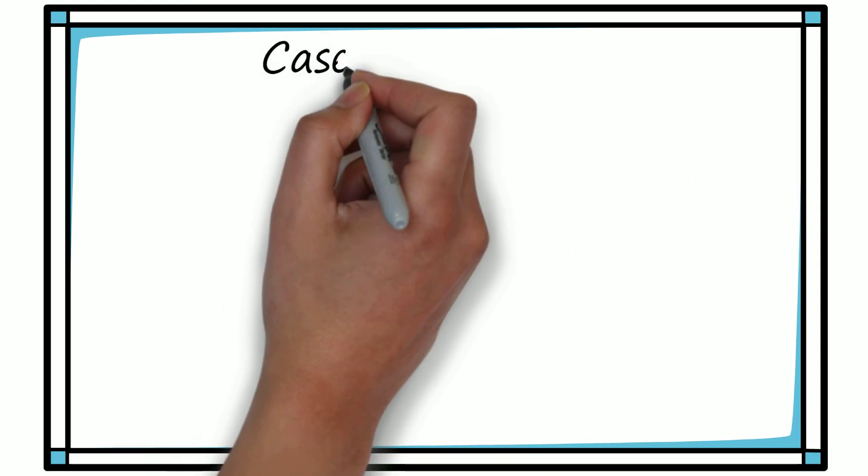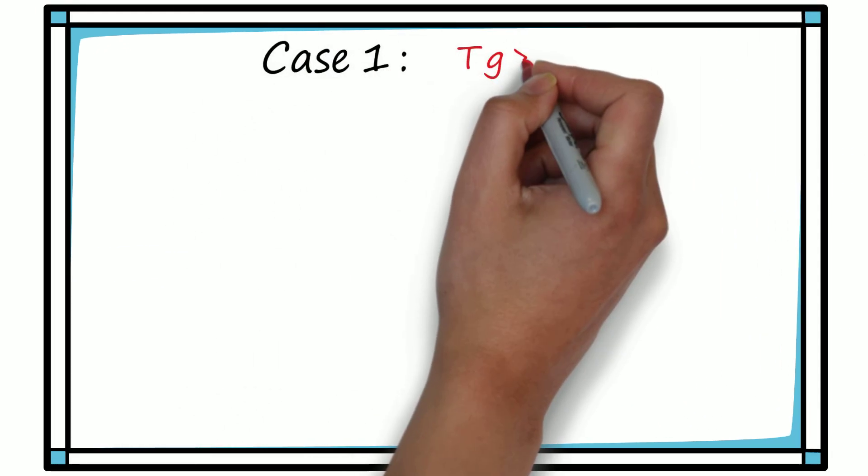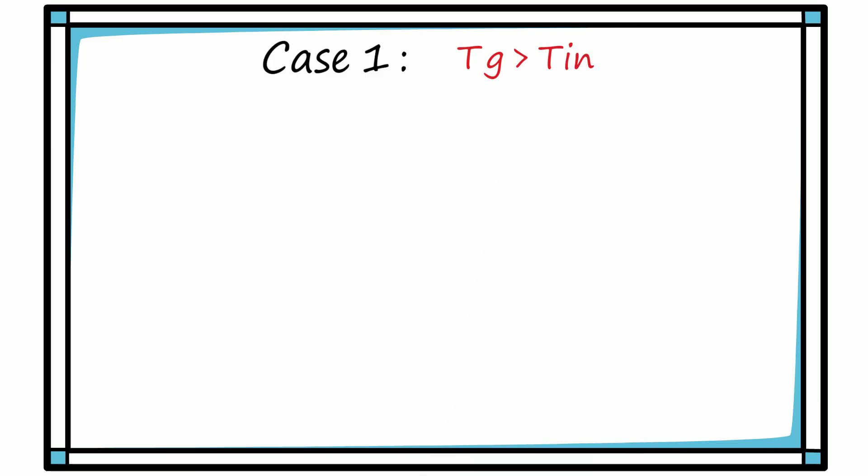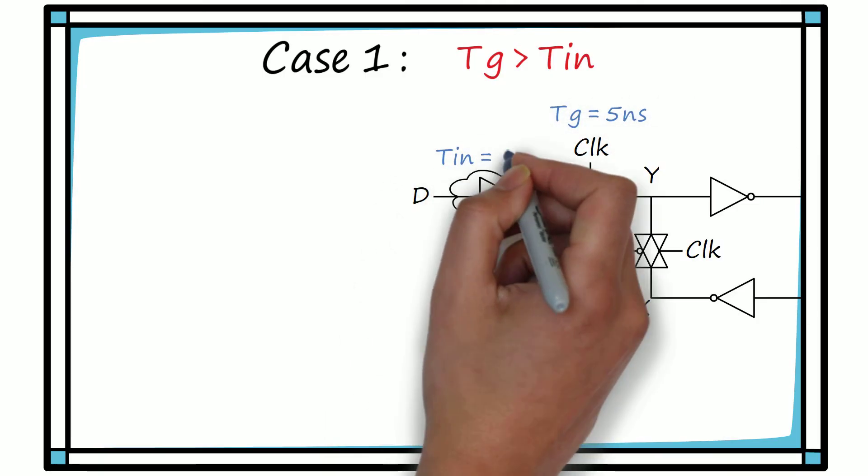There are three possibilities. First case, when the transmission gate switching delay is greater than the data path delay. That is TG greater than TIN. Let the transmission gate delay be 5 ns and the data path delay be 2 ns.